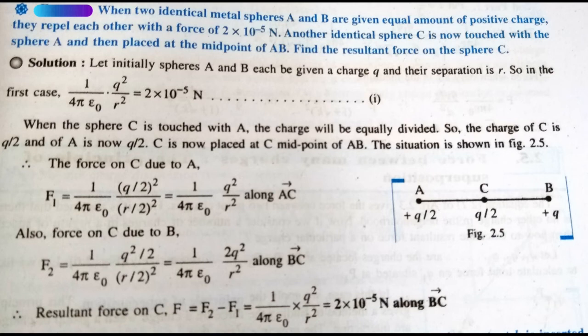The net force equals (1/4πε₀) × Q²/R². From equation 1, we already know this expression equals 2 × 10⁻⁵, so definitely the net force is 2 × 10⁻⁵ N along BC. We are writing both the magnitude and the direction — don't forget this. This is a very basic example based on Coulomb's law. Do practice this sum and copy it in your classwork.